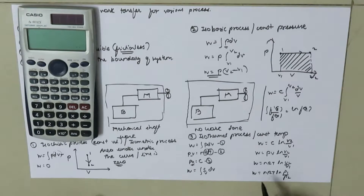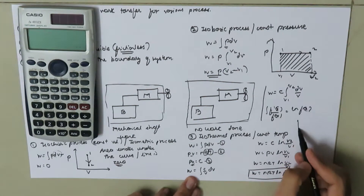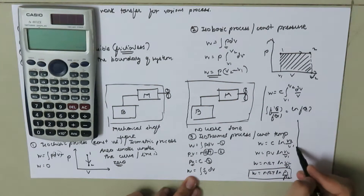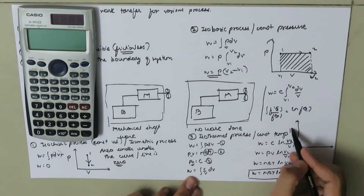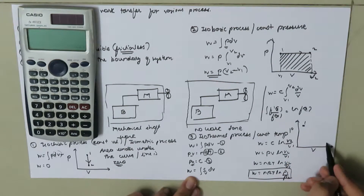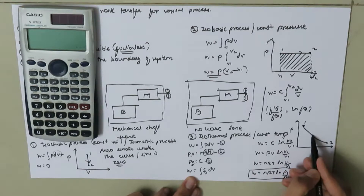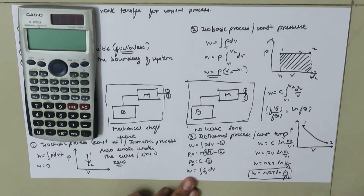This is the expression for work done in the isothermal process. If we plot this on the PV diagram, with initial state 1 and final state 2, we get a rectangular hyperbolic curve. So the isothermal process is also called the rectangular hyperbolic process.